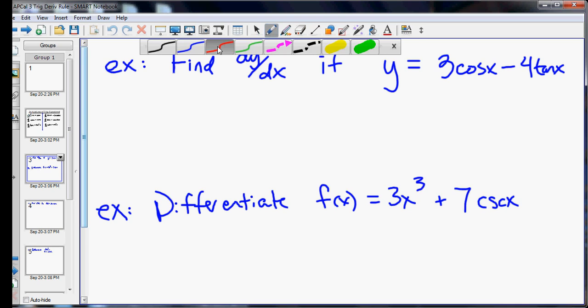The coefficients in this case just stick around. So for example, in this one, the derivative of 3 cosine x, the 3 just stays, and the derivative of cosine is negative sine.